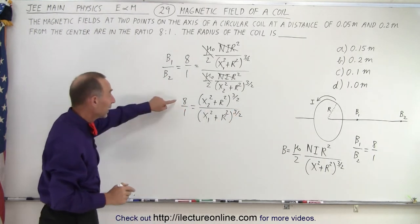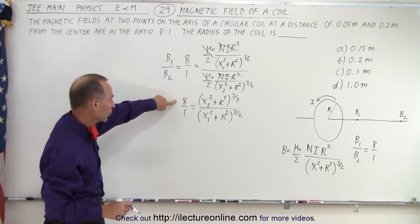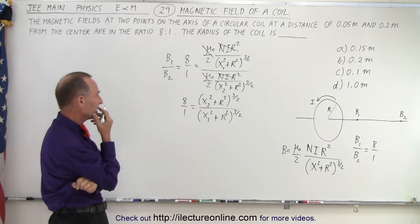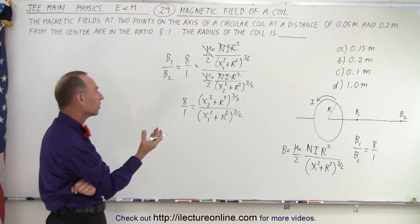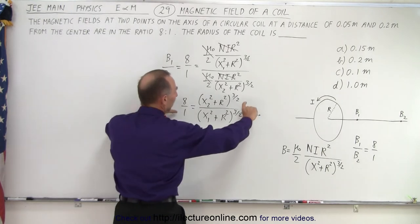Now we can square both sides and then take the cube root. Let's square both sides. If we square both sides we get rid of the square root symbols. So we square both sides so we get 64 is equal to the quantity x sub 2 squared plus r squared to the third power divided by x sub 1 squared plus r squared to the third power.